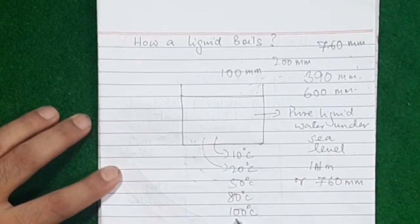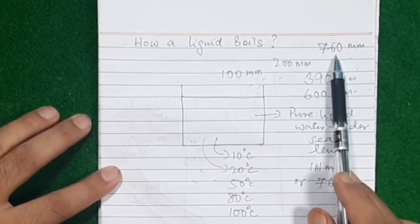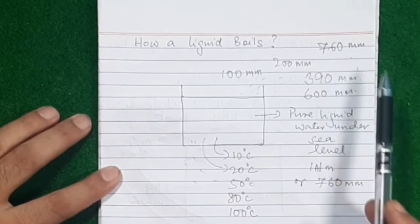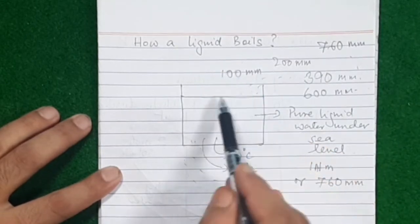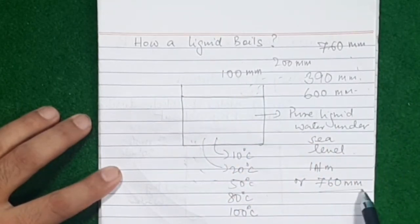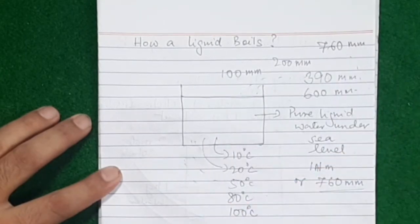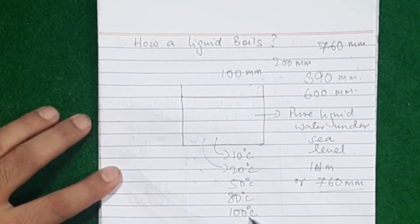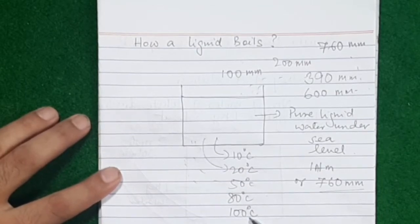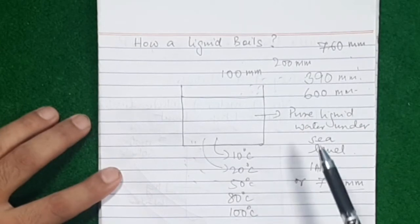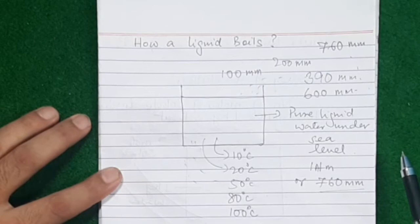When water is heated to 100 degrees Celsius, its vapor pressure rises to 760 mm. Remember, 760 is also the atmospheric pressure just above the surface of water. The vapor pressure of water itself has risen to 760 at 100 degrees, and you know 100 is the boiling point of water — so water starts boiling.